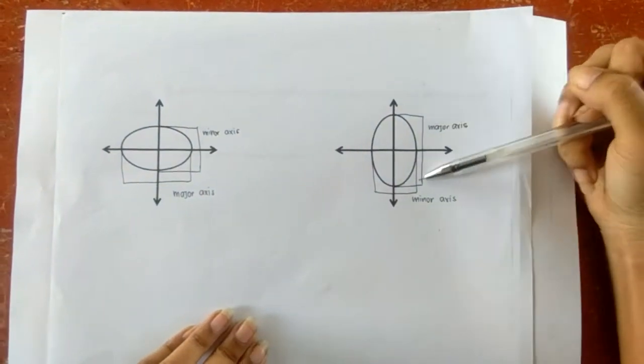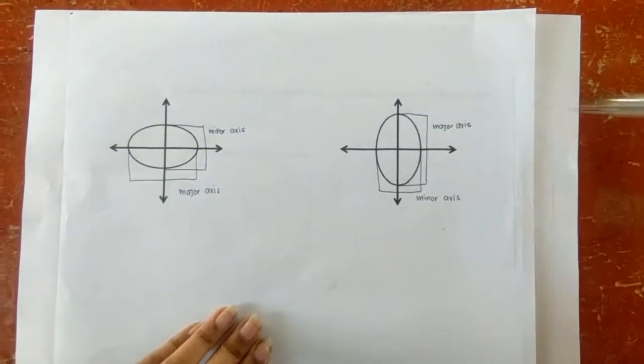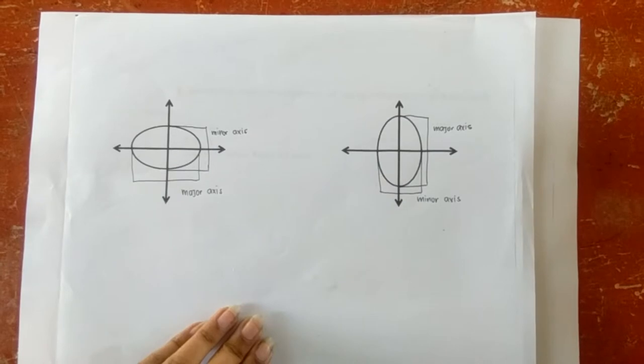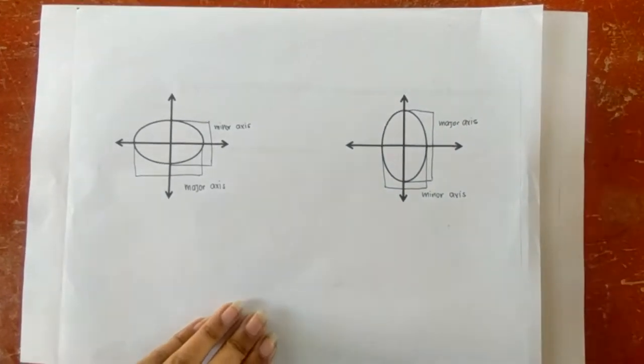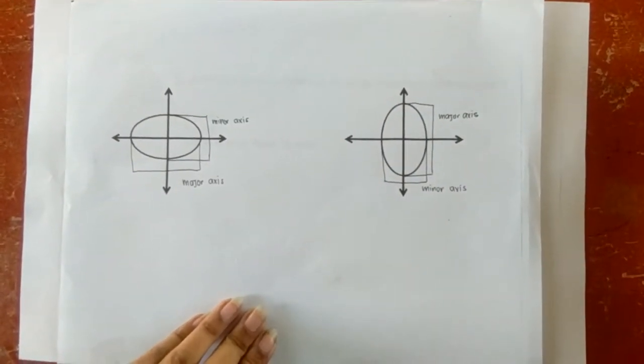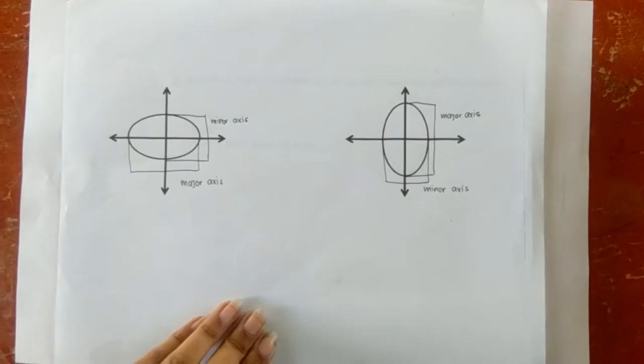Remember that in the major axis lies your vertices, your foci, and the center of your ellipse. Now, let us go on to the vertices. The vertices are the endpoints of your major axis.